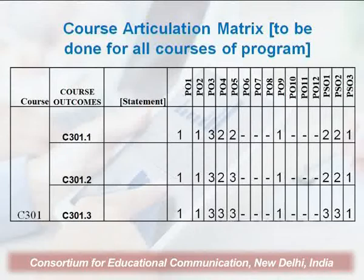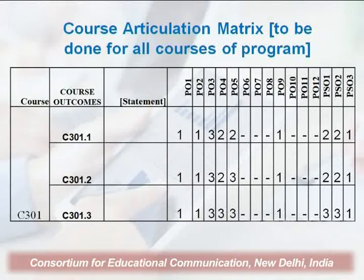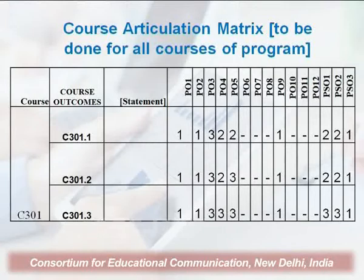The course articulation matrix is to be done for all the courses of the program. For example, on the left-hand side we have C301 with the course outcomes in the vertical column. This is just an illustration to explain how the course articulation matrix is formed. The nomenclature of 1, 2, and 3 shows various levels of attainment and mapping with the course and particular course outcome calculations.